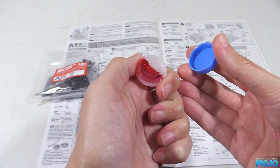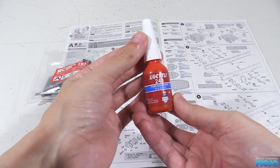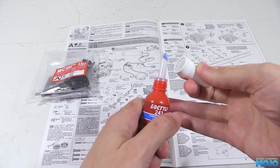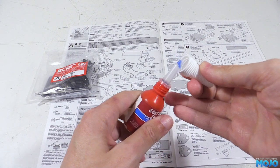But I'm going to use some liquid threadlock instead. It's not usually friendly towards plastic, so you have to be very careful with it, but I find it a little bit easier to get consistent results with the liquid.